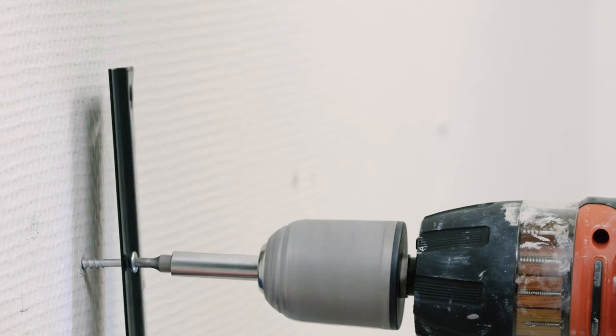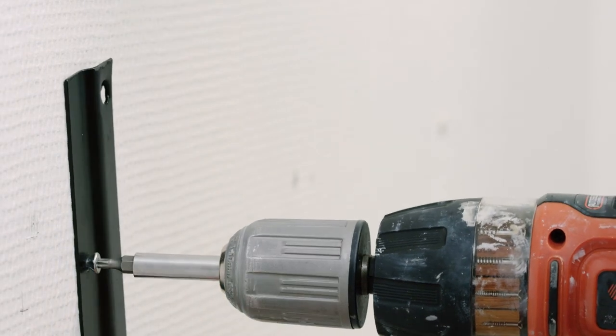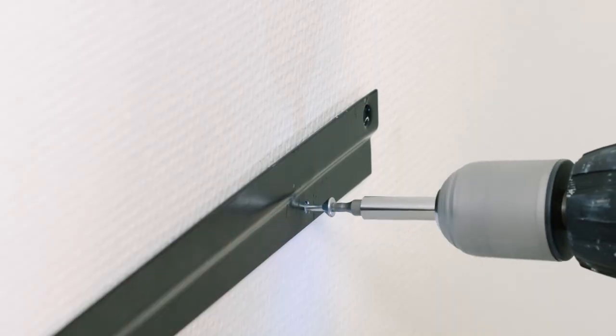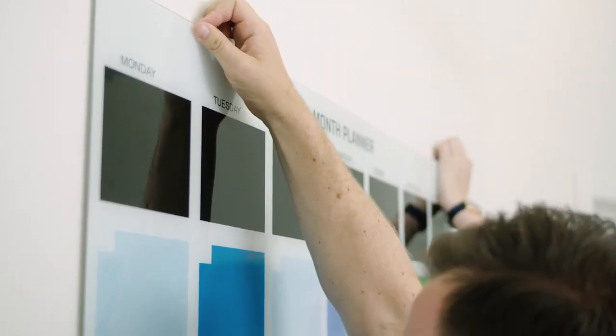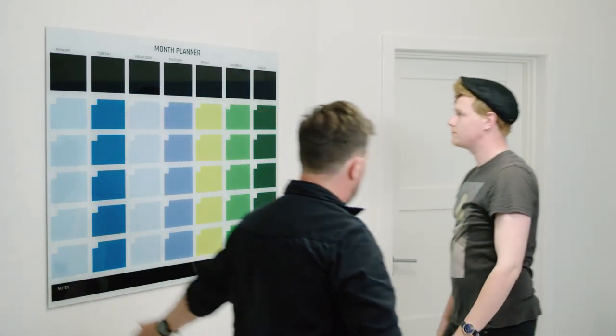Mount the bottom rail. Finally, hang the glass board on the two rails and it is ready for use.